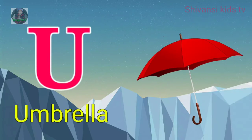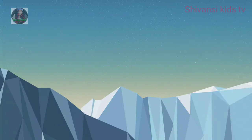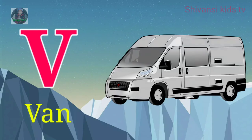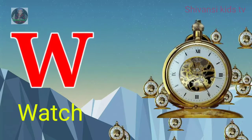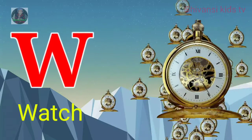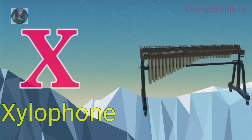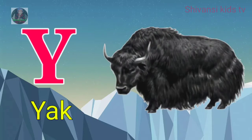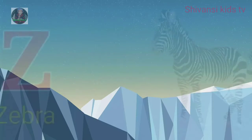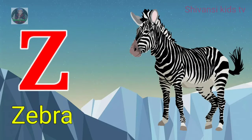U for umbrella, V for van, W for watch, X for xylophone, Y for yard, Z for zebra.